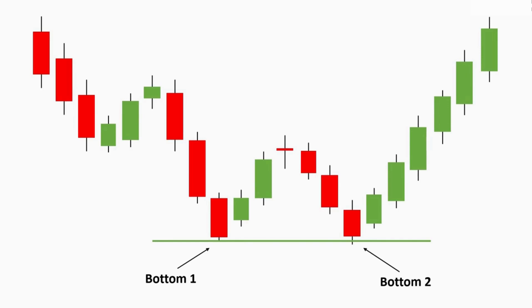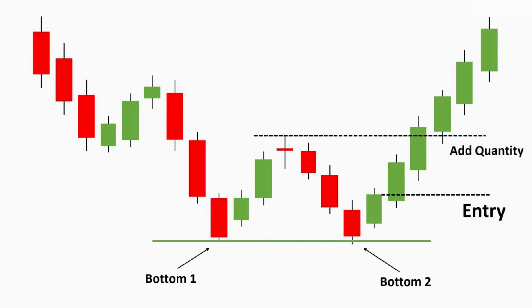We take our first trade on the double bottom chart pattern when the price takes support on the previous bottom — that is where we enter the trade and buy the stock. We add more quantity when the price gives a breakout from the neckline of this pattern. The stop loss will obviously be below the support. We take a long entry in the price and can exit by using a target or a trailing stop loss to make this a really good trade.